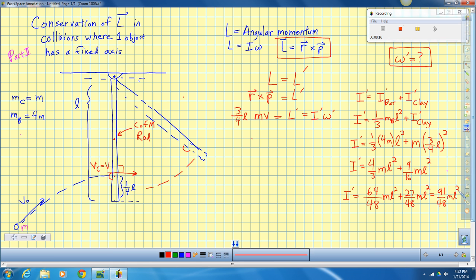So i prime is going to be out of forty-eighths, let's see, that times sixteen, so sixty-four over forty-eight mL squared plus twenty-seven over forty-eight mL squared, which is going to be, let's see, ninety-one forty-eighths. Did I do that right? Ninety-one forty-eighths mL squared is our inertia after the collision. Let's hope some stuff cancels out.